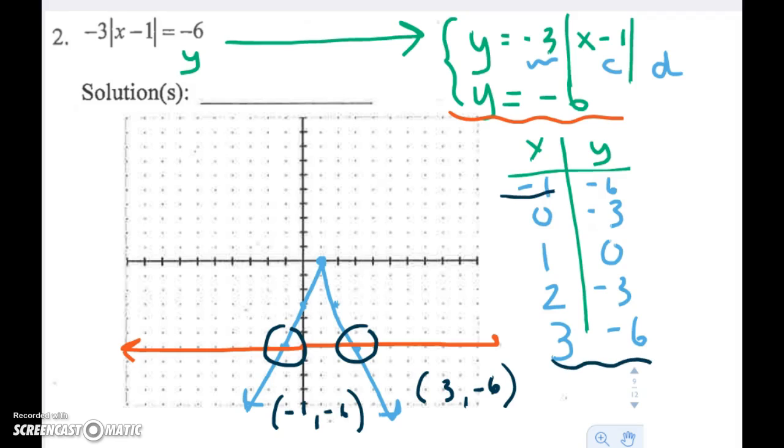You can also see these in the table where y equals negative 6. So I already know I wanted y to equal negative 6. And again, my solution are just my x values where that happens. So x equals negative 1, and x equals 3.